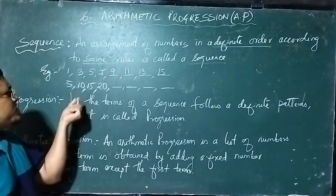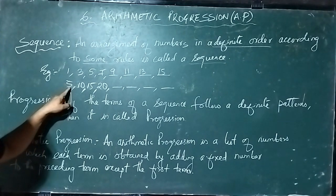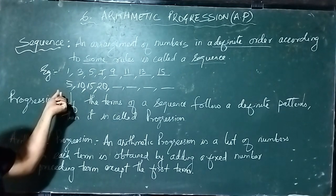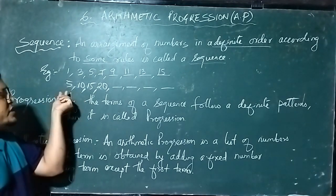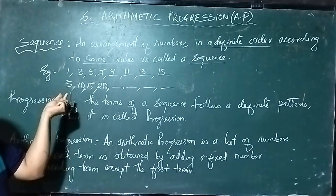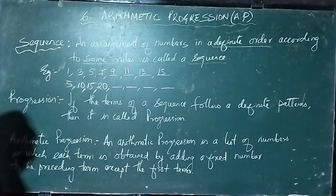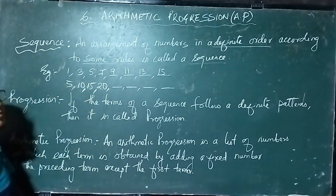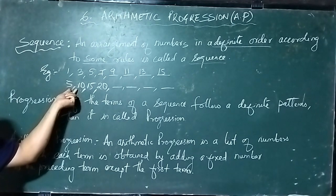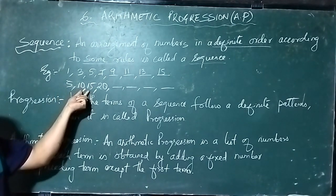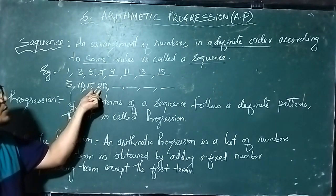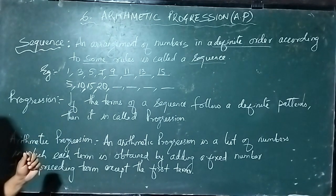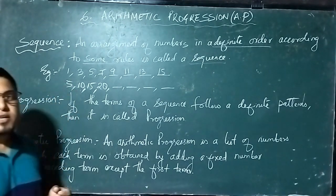Some more examples: 5, 10, 15, 20. This is also in a definite order. What is the rule here? It's a difference of 5. So here this is called term 1, term 2, term 3, term 4. The difference of term 2 and term 1 is 5. The difference of the next two numbers is also 5, and the difference of these two numbers is also 5. This is in a definite order, and the rule is addition of 5.